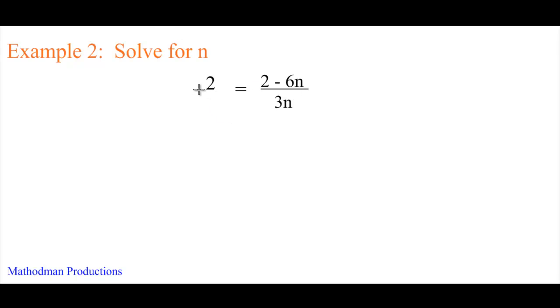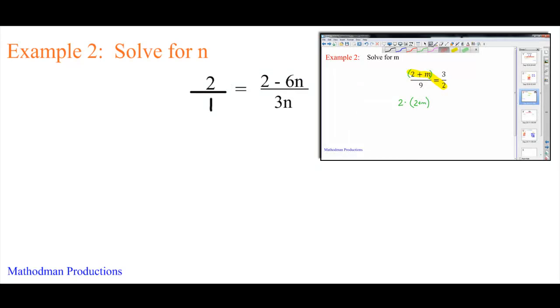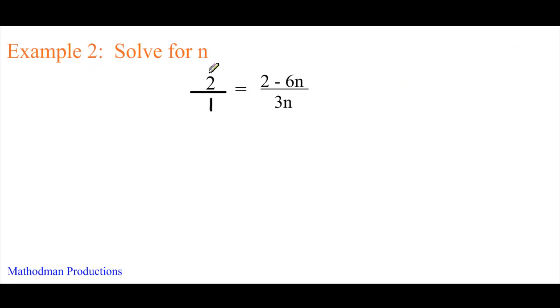If you want to make 2 into a fraction, you can put 2 over 1. Because 2 and 2 over 1 is the same thing. Doesn't this problem look familiar to one of the previous lessons that we've done? If you were thinking of cross-multiplying, you are exactly right. 2 times 3n, that's just 6n. And set it equal to 1 times 2 minus 6n.